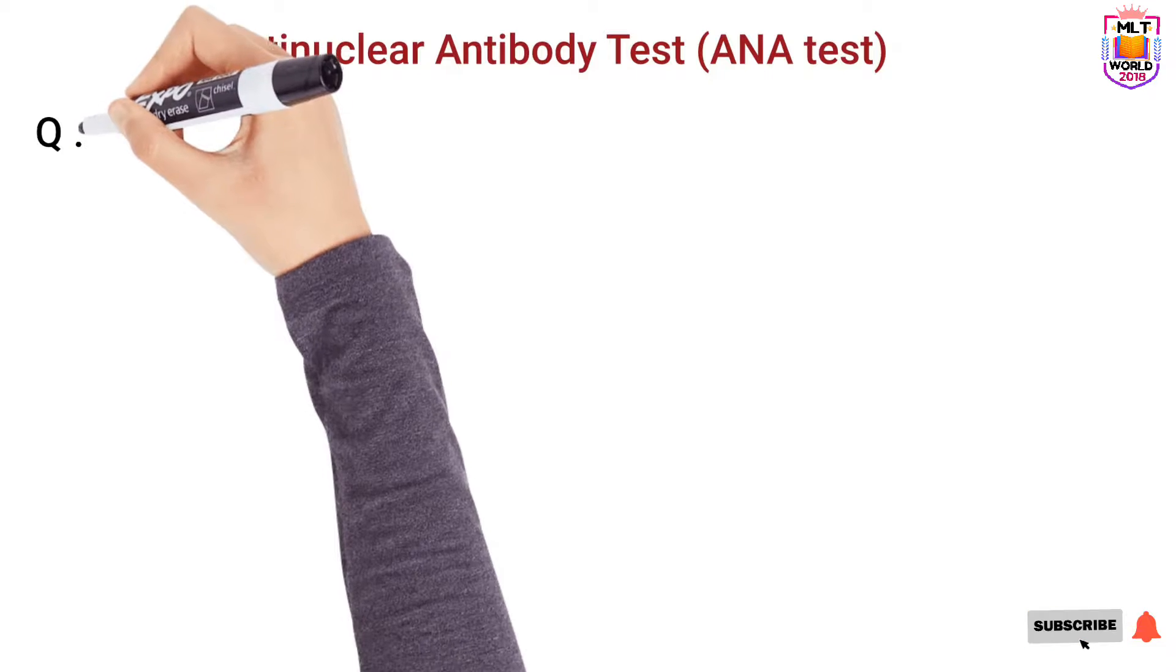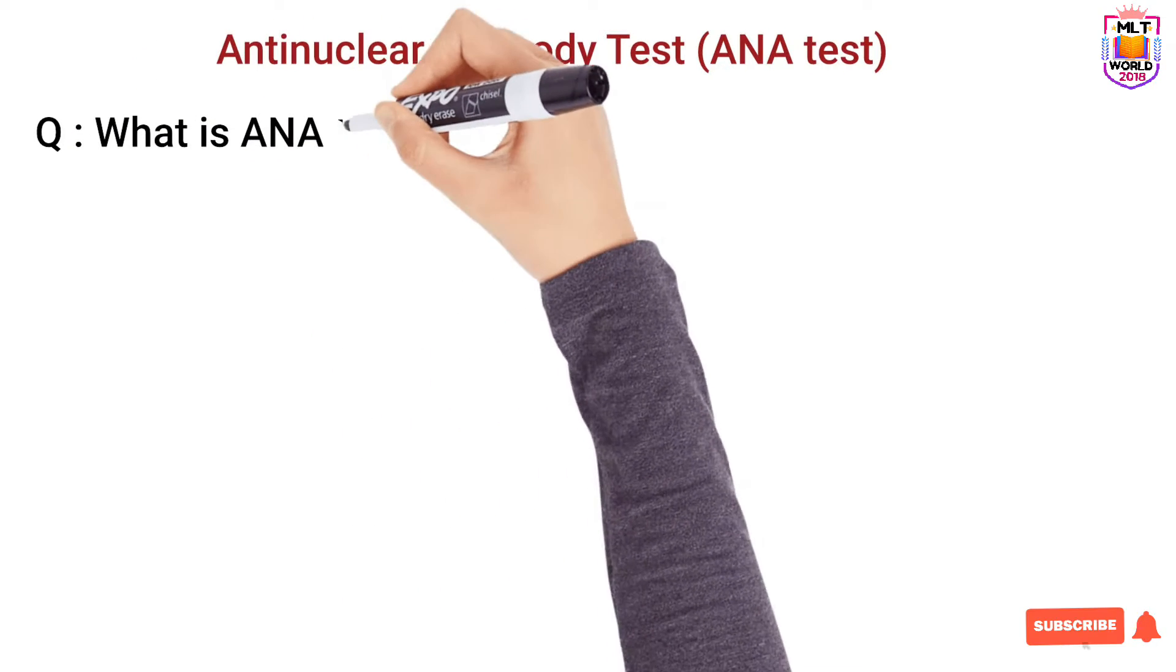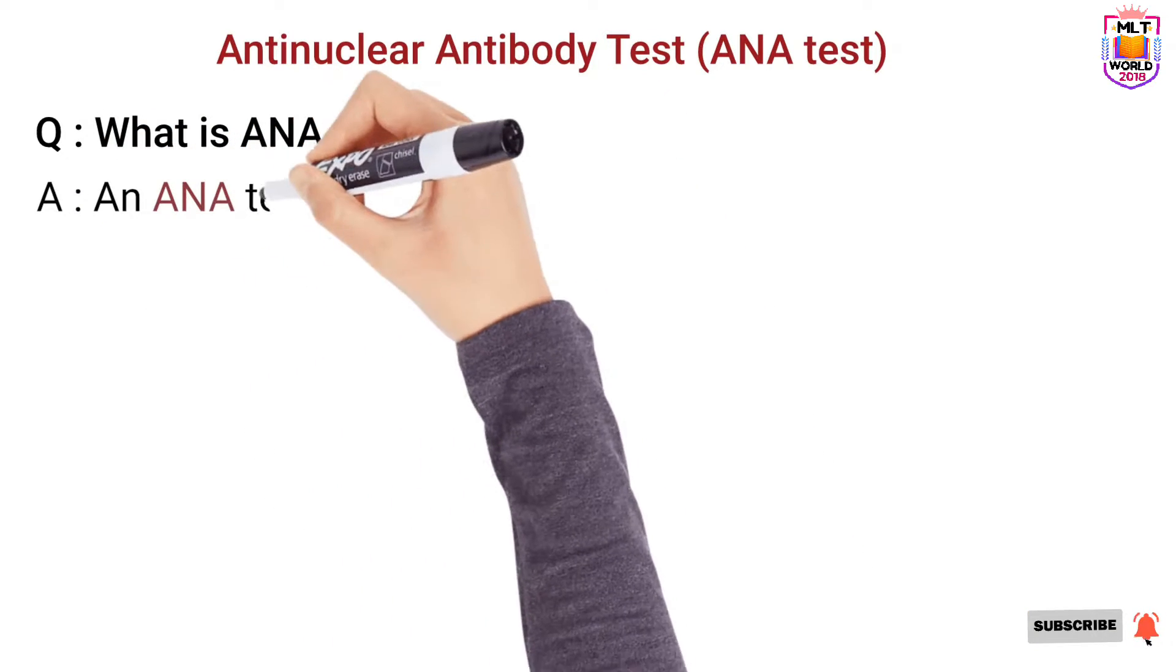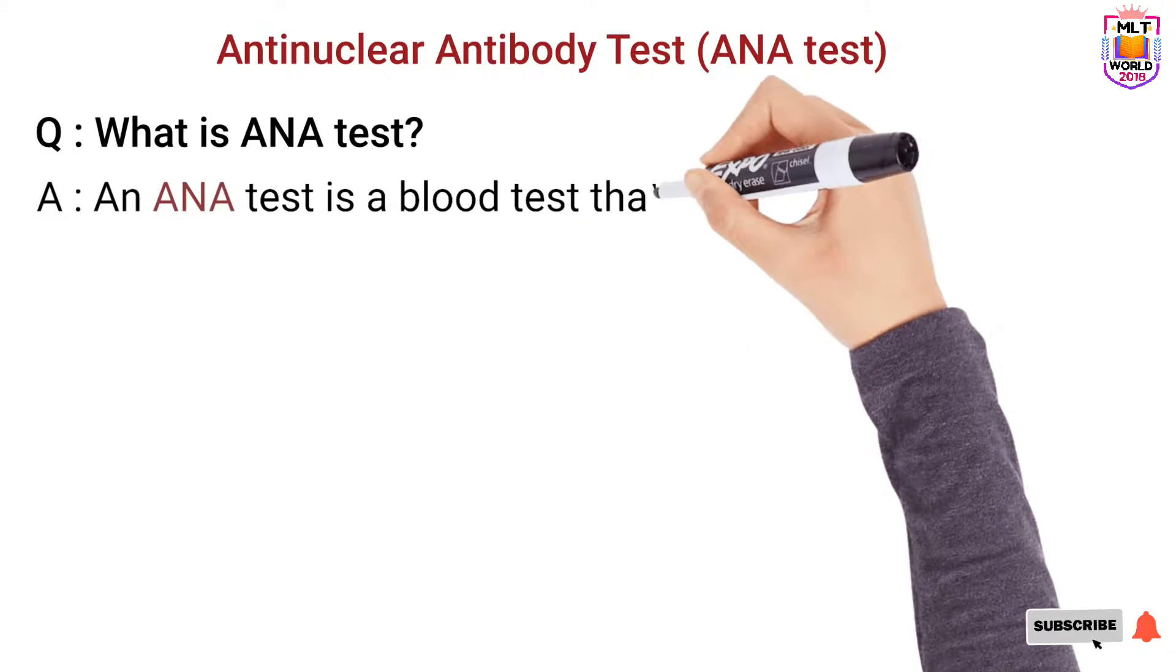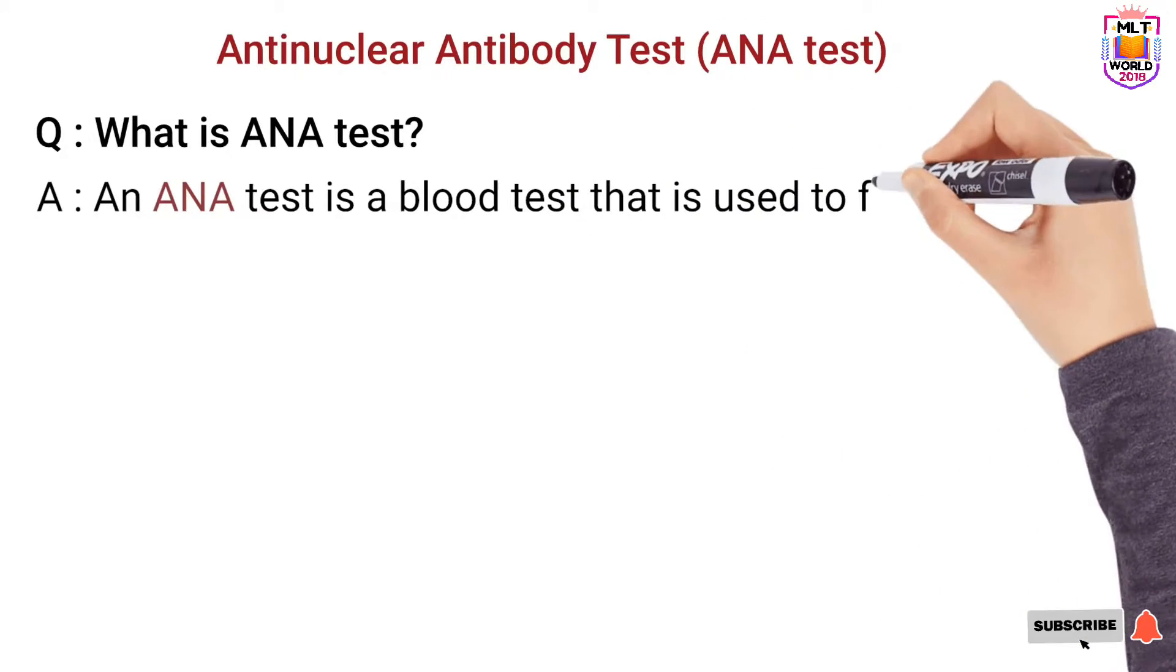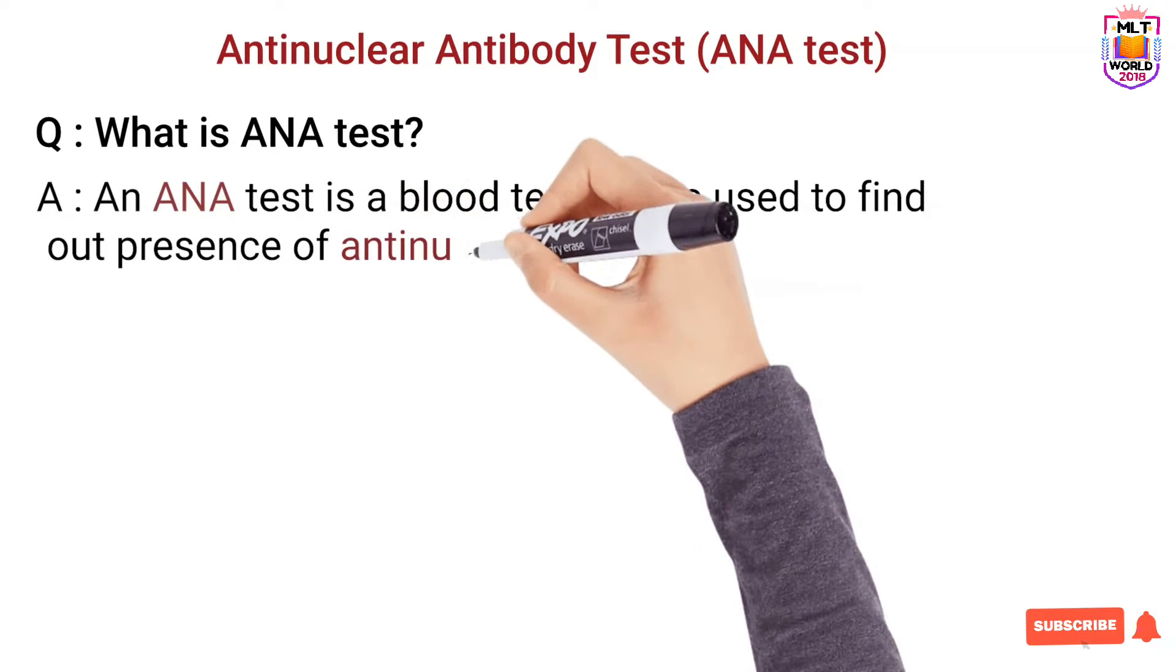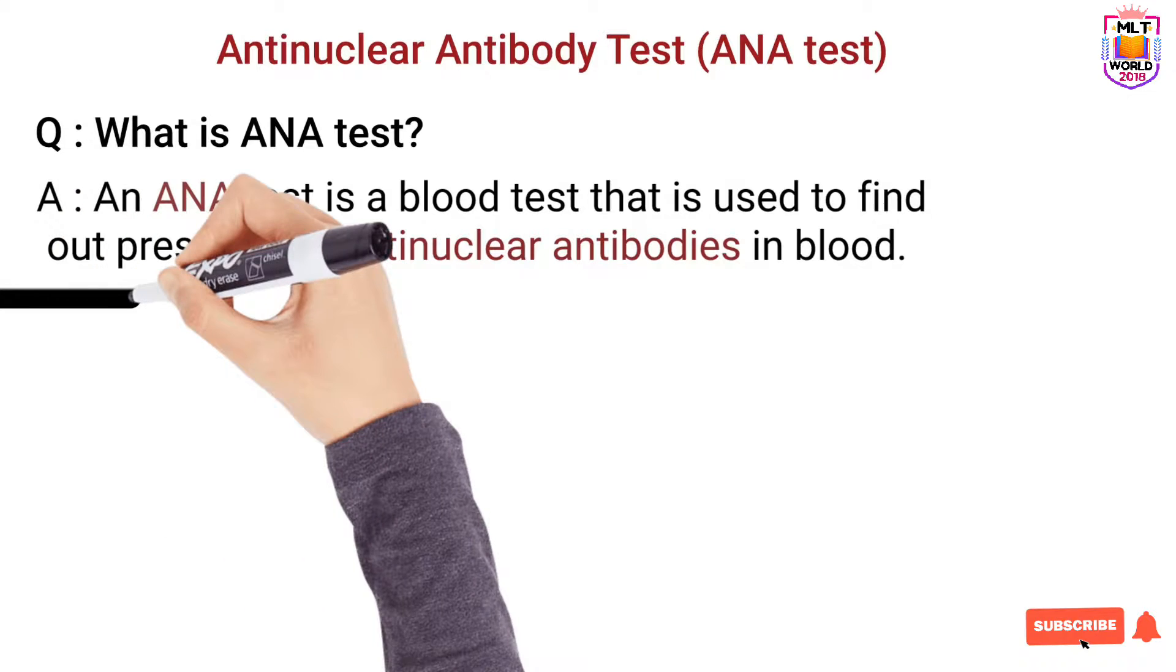In the form of question answering we will discuss this lecture. Let's start. So first question will be what is ANA test? As we told, ANA is Anti-Nuclear Antibody. So this test is done in blood to check the presence of Anti-Nuclear Antibodies, whether in the blood there are Anti-Nuclear Antibodies present or not. For this doctors are writing this test.